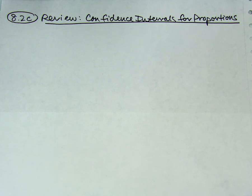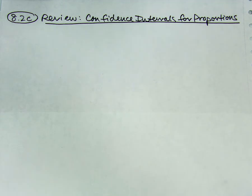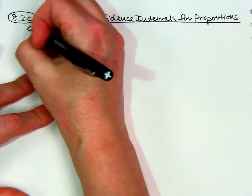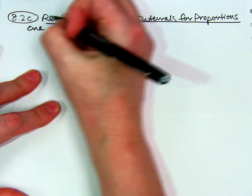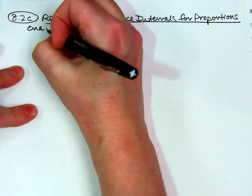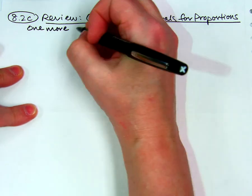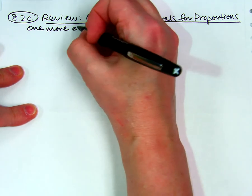All right, this is the notes for A2C, which is really a review lesson. I don't have anything new to teach you in this lesson, but I thought we should do one more example of the four-step process for making a confidence interval.